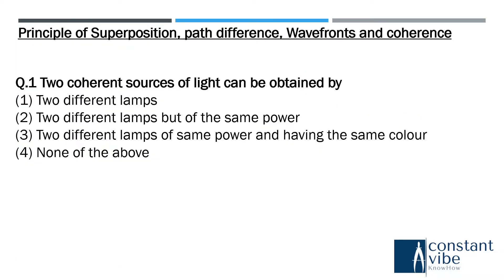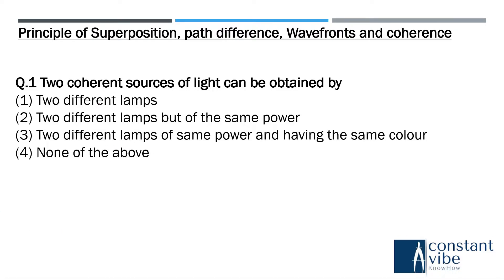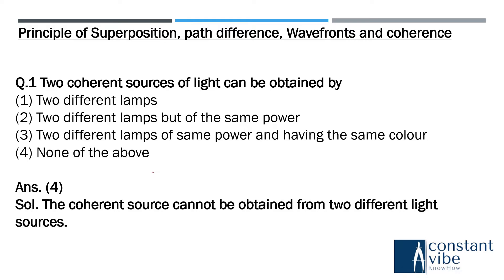Let us start now. The topics covering this section are: Principles of Superposition, Path Difference, Wave Fronts, and Coherence. Here is the first question: Two coherent sources of light can be obtained by? There are four options. The coherent source cannot be obtained from two different light sources.